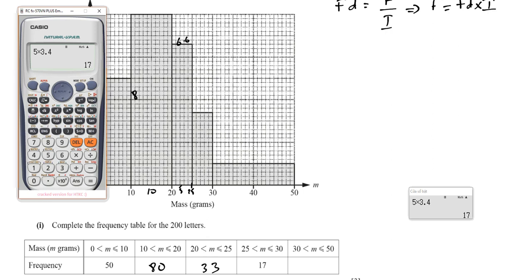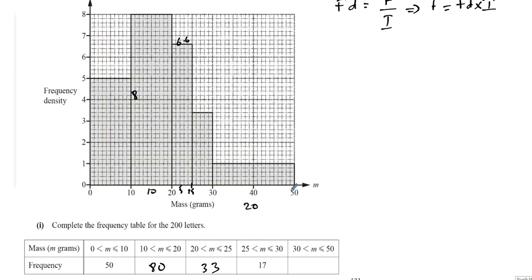And then the final bar, we've got 20. The width is 20 this time, and the height of the bar is 1. That's 20 times 1, which is 20.